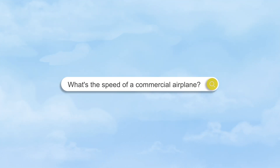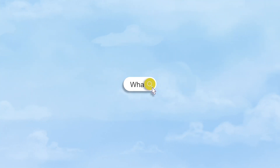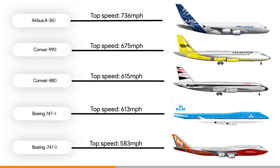What is the speed of a commercial airplane? Depending on what kind of commercial airplane you're talking about, if you're talking about a jet airplane, usually around 500 to 600 miles per hour.